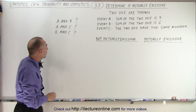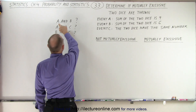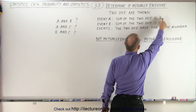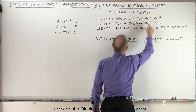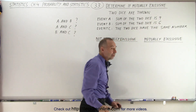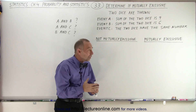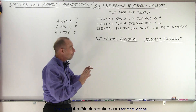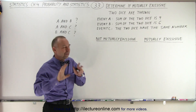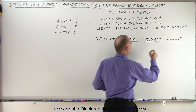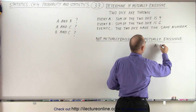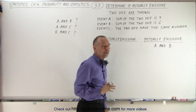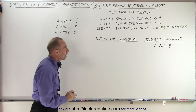Let's take a look. First, let's look at A and B. Event A says the sum of the two dice is nine, and event B says the sum of the two dice is equal to six. There's no way that when you throw two dice you can have a nine and a six at the same time. So therefore those two events are mutually exclusive — they cannot happen at the same time. A and B are mutually exclusive events.